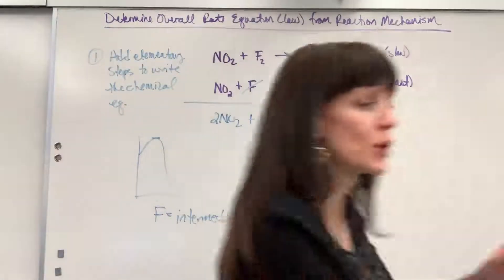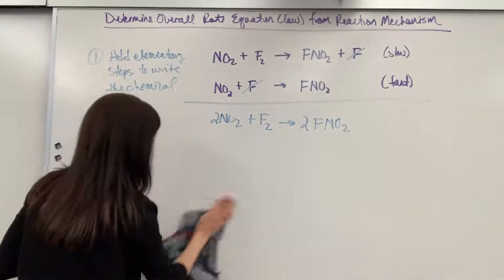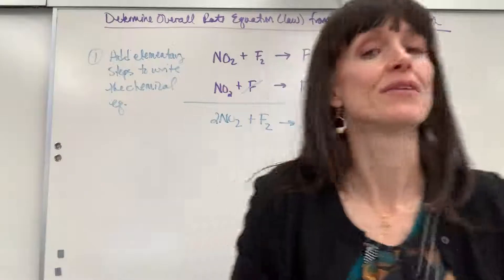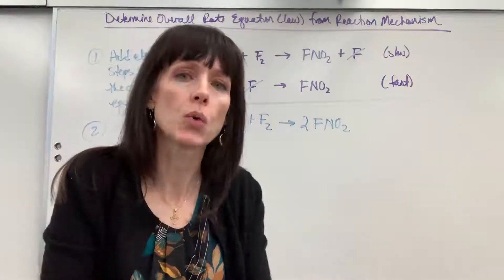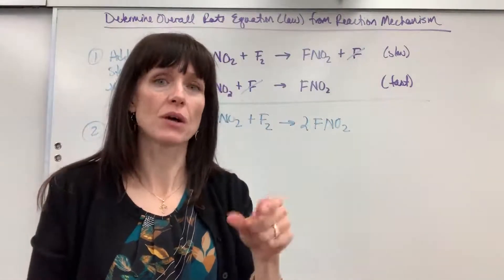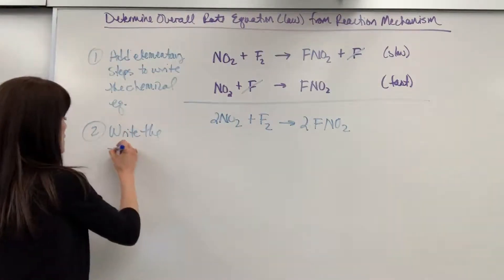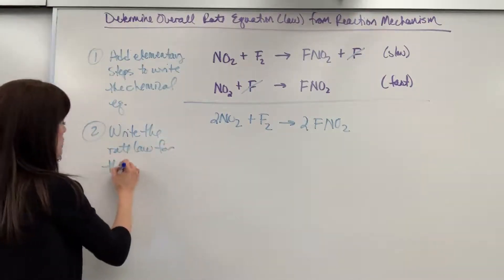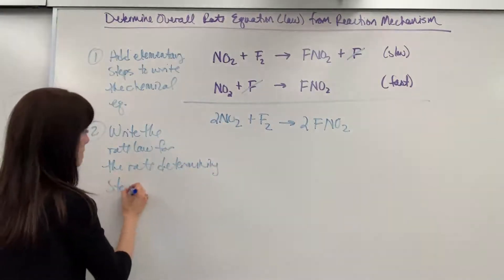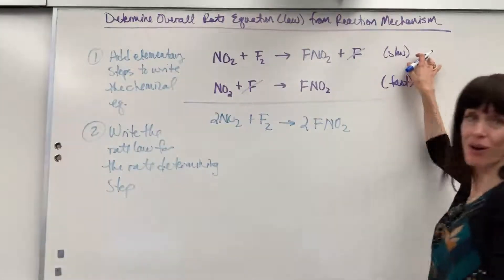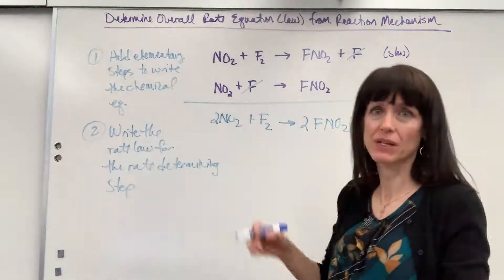The second step is we need to write down the rate equation from the rate determining step. You'll recall that a reaction can't go any faster than the slowest elementary step, the slowest step in the entire process. So let's write the rate law for the rate determining step. I look at this—it's always the slow step, that's always going to be your rate determining step. Easy, just find slow, bam, done. That's the rate determining step.